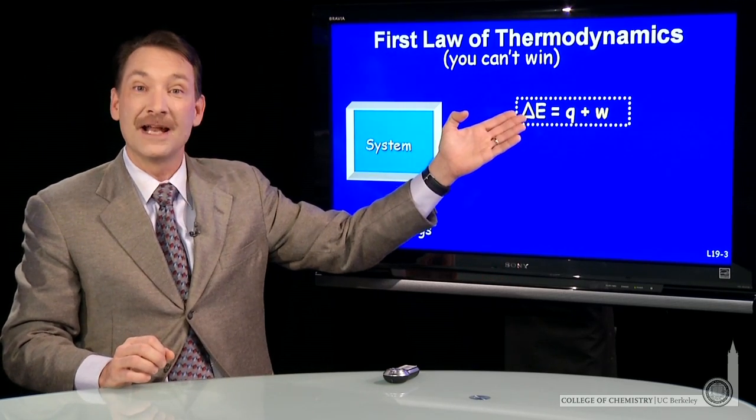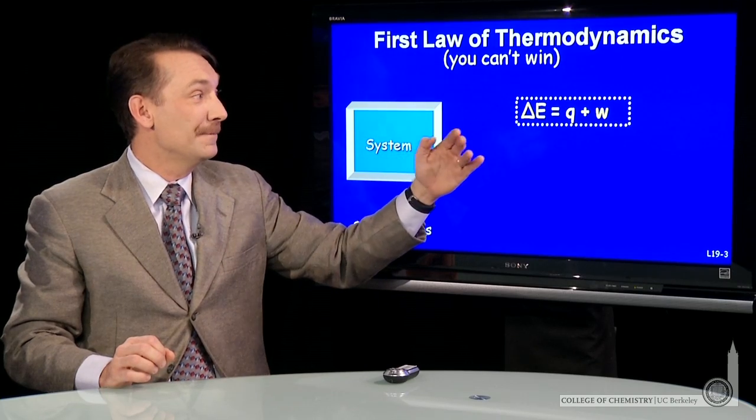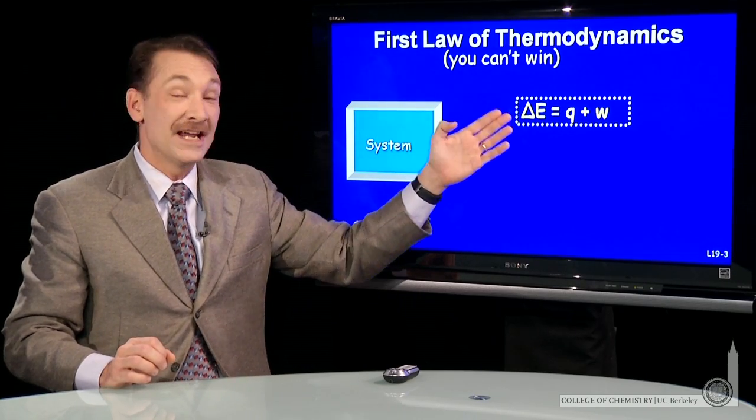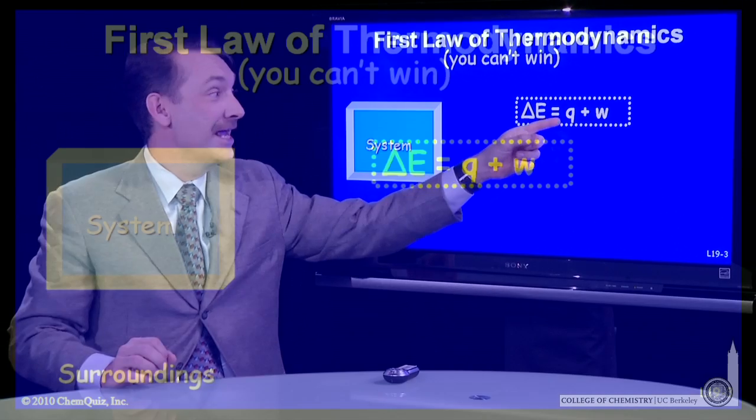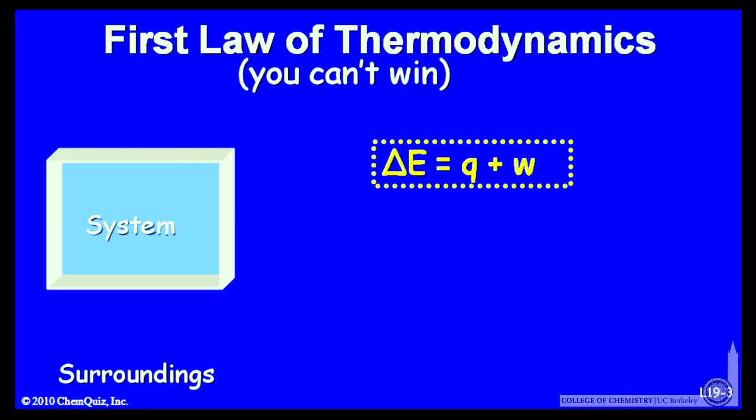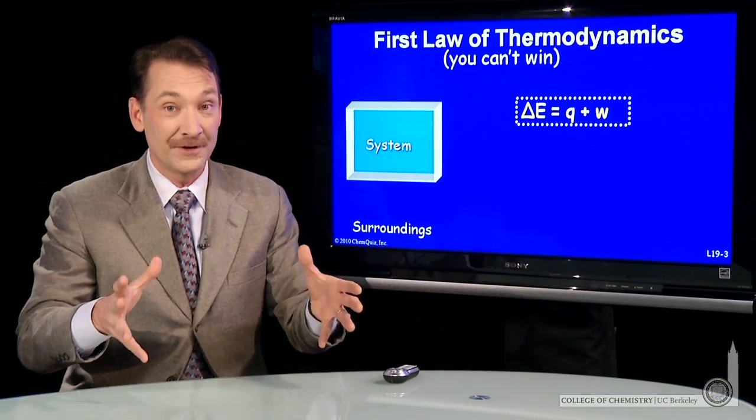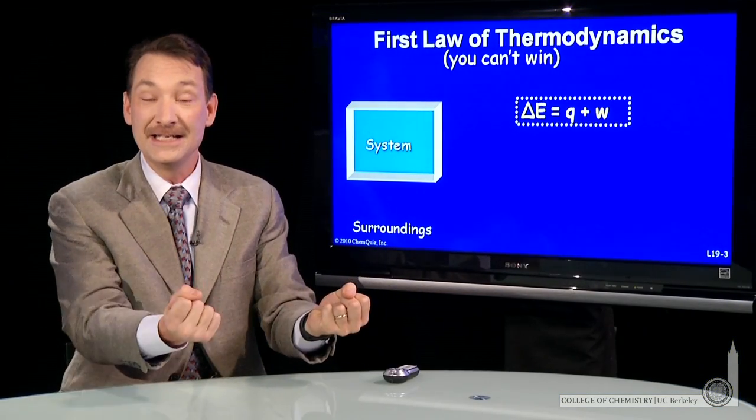Now, energy, and I'll use the symbol E, is going to change in these systems. And energy will change by two mechanisms: heat and work. I'll use the symbol Q for heat and the symbol W for work. Now, it's important that we understand the difference between energy, heat, and work.